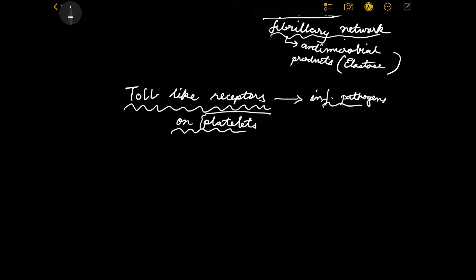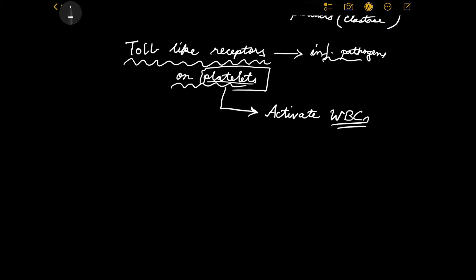So this time it is the platelets which are acting as the identifying cells. The platelets recognize the infective pathogens, and the next logical step is to call the guys who can actually take care of that source — which is to activate the WBCs, in this case neutrophils. The entire inflammation process will go on, reactive oxygen species will be produced, and their concentration will increase.